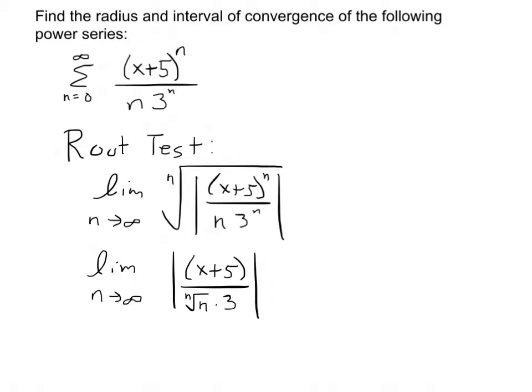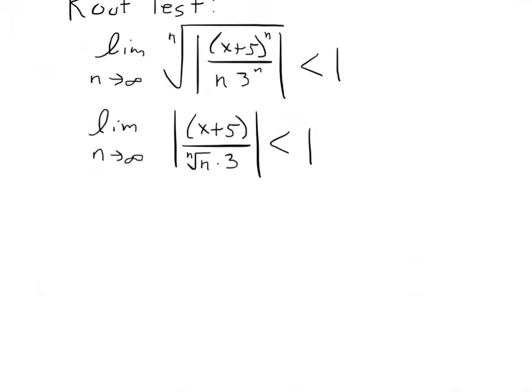I'll have to deal with this individually. So I'm going to have the absolute value of x plus 5 over the nth root of n times 3. And remember, for the root test, this has to be less than 1 in order to converge. So now hopefully you remember that we memorized the limit as n approaches infinity of the nth root of n is 1. So when this is all said and done, I just have x plus 5 over 3 has to be less than 1.